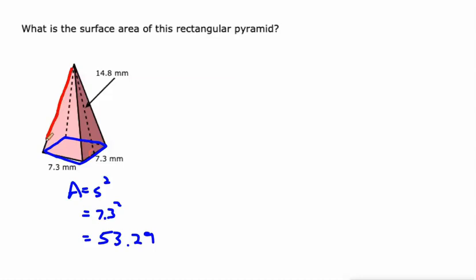Then we could find the area of this triangle. The area of a triangle is one half base times height, so in this case, one half times 7.3 times 14.8.